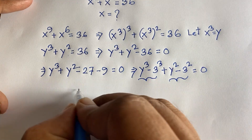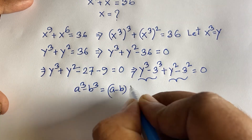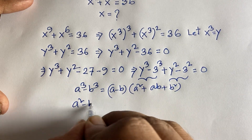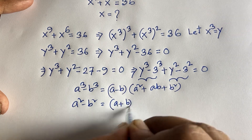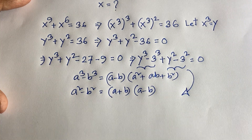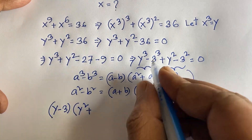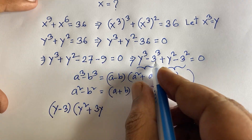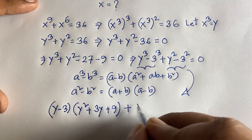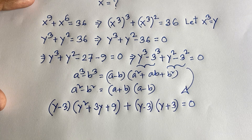We apply two algebraic identities: a³ − b³ = (a − b)(a² + ab + b²), and a² − b² = (a + b)(a − b). Applying both rules, the equation factors as (y − 3)(y² + 3y + 9) + (y + 3)(y − 3) = 0.